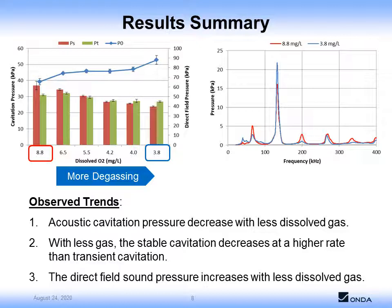Jumping to the punchline, we take a look at a summary of the acoustic measurement data which was collected at different dissolved gas concentrations, and we observe a few trends. First, we observe that the cavitation pressure — both the stable and the transient cavitation pressure — decrease with less dissolved gases. In the plot here, the red represents the stable cavitation pressure, and the green represents the transient cavitation pressure. You can notice both decrease with less dissolved gas. The second trend is that the stable cavitation decreases at a higher rate than the transient cavitation. So the red bars decrease at a higher rate than the green bars with less gas, and we found that interesting.